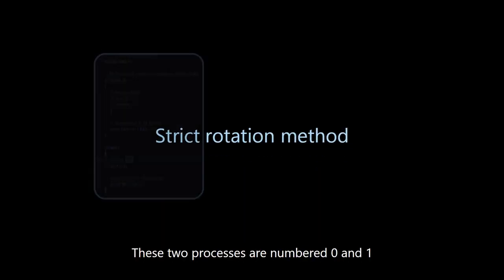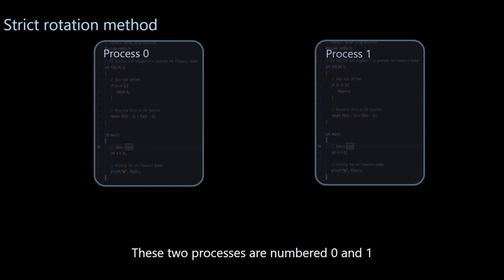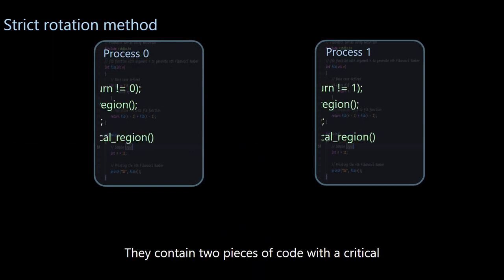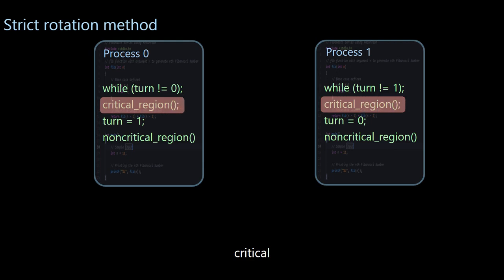Let's introduce a solution, strict rotation method. These two processes are numbered 0 and 1 respectively. They contain two pieces of code with a critical section in between.